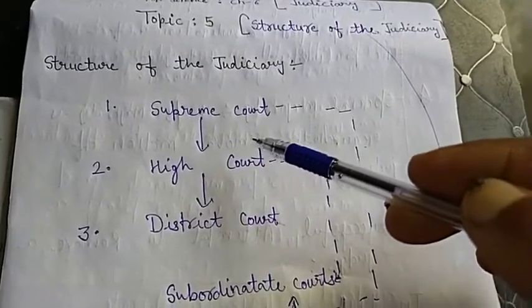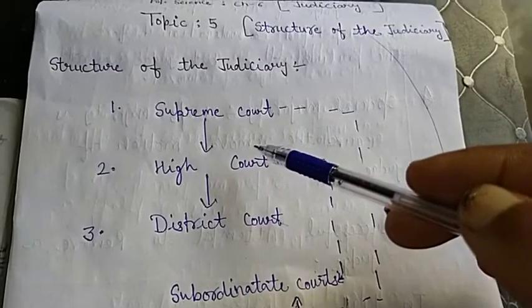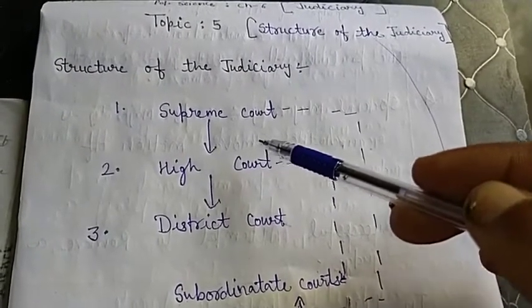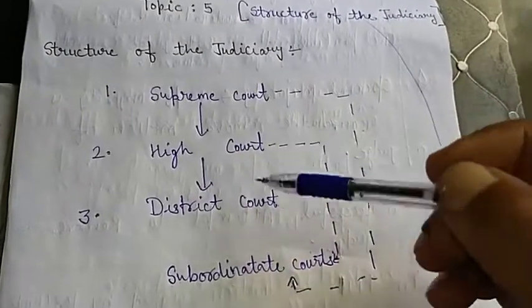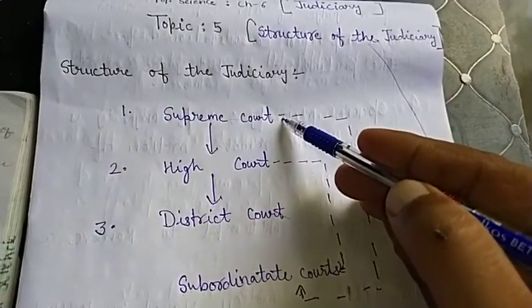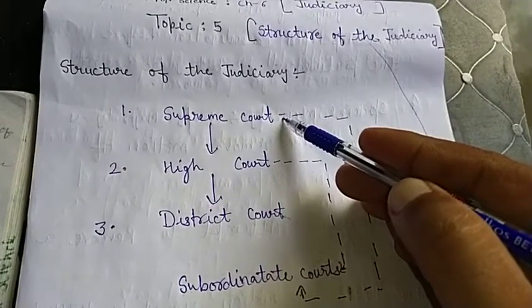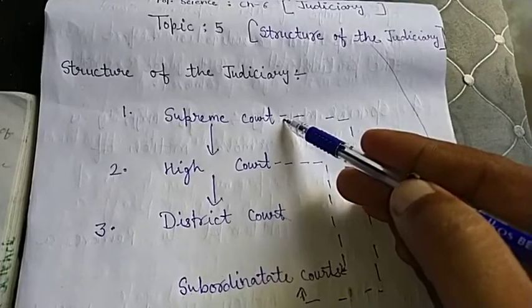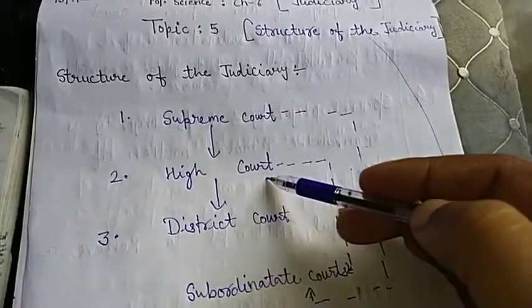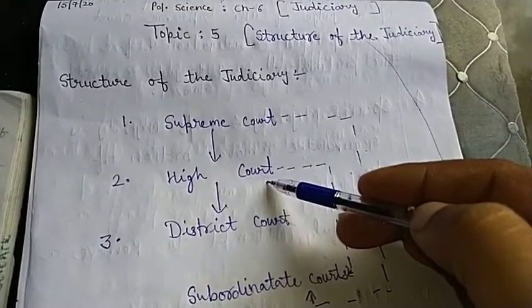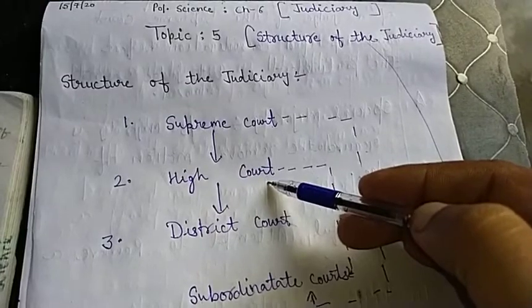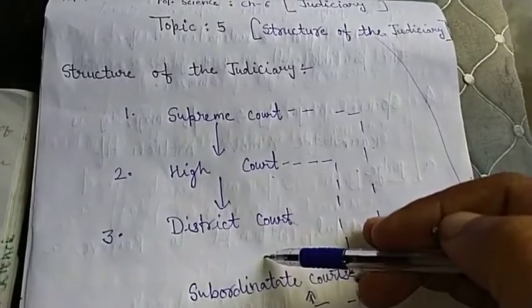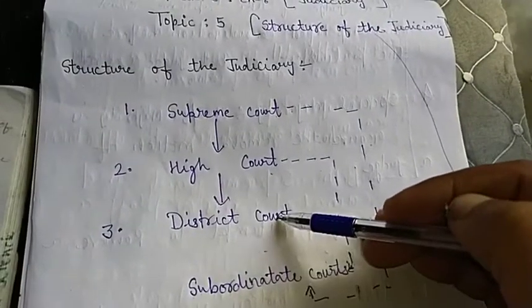The structure of the Judiciary in India is pyramidical. Pyramidal with the Supreme Court at the top. Which court at the top? Supreme Court. And High Court is below the Supreme Court. And the lowest level is District Court.